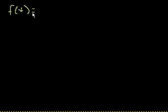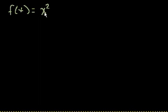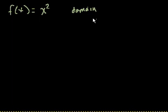Let's say I had f of x is equal to x squared. What values of x can I put in here so I get a valid answer for x squared? Well, I could really put anything in here — any real number. So here the domain is the set of x's such that x is a member of the real numbers.